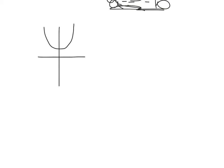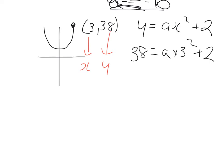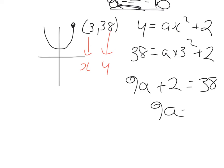Let's try two more. This time the parabola goes through (3, 38) and the equation is y equals ax squared plus 2. Where I see x replace it with 3, where I see y replace it with 38. So 38 equals a times 3 squared plus 2, that's 9a plus 2 equals 38, giving 9a equals 36 and a equal to 36 over 9, which is 4.